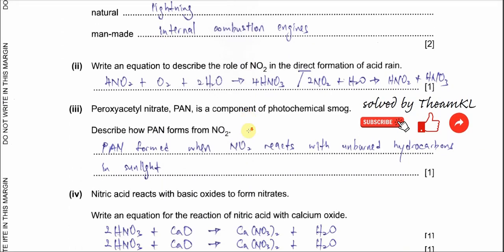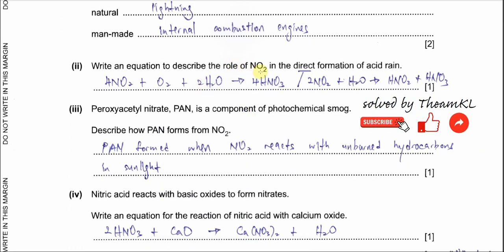Part 2: Write the equations to describe the role of NO2 in the direct formation of acid rain. Direct formation means we use NO2 to make the acid, not the formation of SO3 which eventually forms sulfuric acid. We use NO2 with oxygen and water so it can form nitric acid.